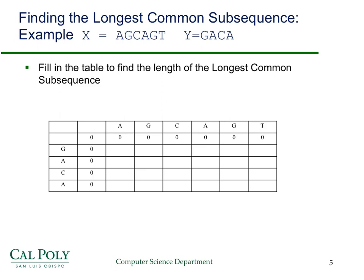Let's fill in some entries. The first characters G and A don't match, so we take the max of zero and zero and get zero. Next, G matches with G, so we get a match and add one to the diagonal zero, filling in one. The next characters don't match, so we keep the one. A does not match with G, so we fill in one again. G matches with G again from the diagonal, giving one. T doesn't match with G, so we take the max of zero and one, getting one. Basically all ones are filled in across the first row.